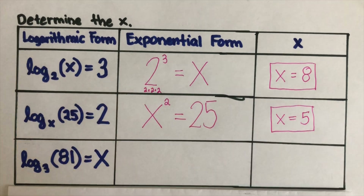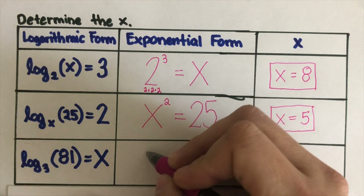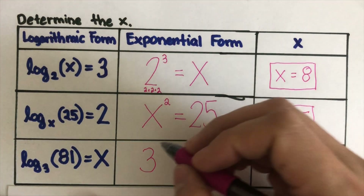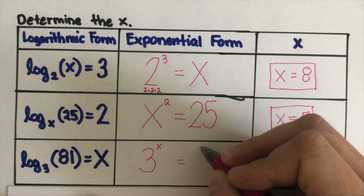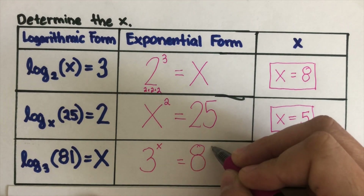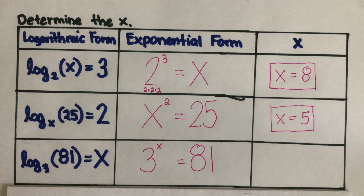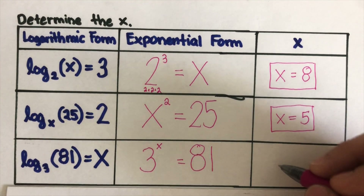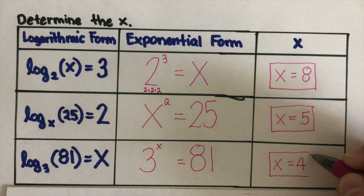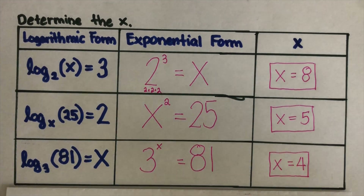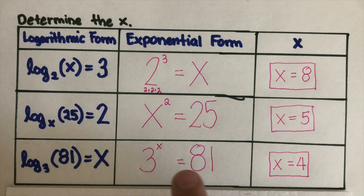And let's have the next one. Change this to its exponential form: 3 to the power x is equal to 81. How many times do we multiply 3? Our x is 4, because 3 times 3 times 3 times 3 is 81.